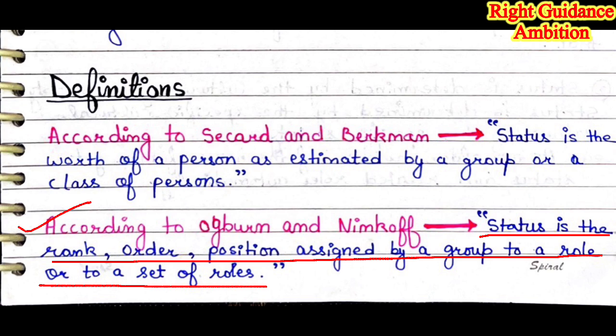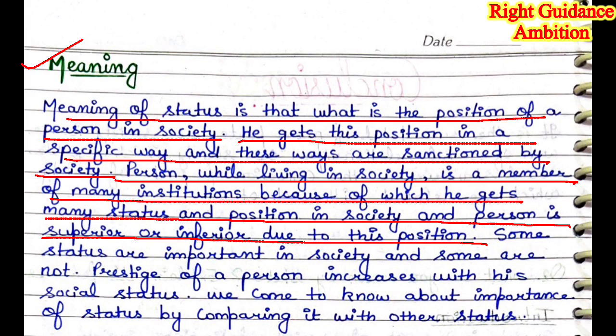Whatever is the function of a person in the group, their function will be according to their rank and status. The rank of the group is assigned by the people. The next heading is meaning. The meaning of status is what the position of a person is in society. Status means the position of a person in society. A person gets this position in a specific way — these ways are sanctioned by society. Whatever ways a person gets a position, society accepts those positions. Then you get that position and you can work accordingly.